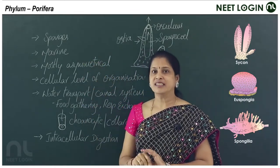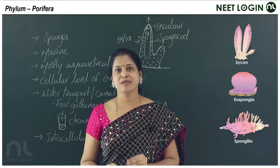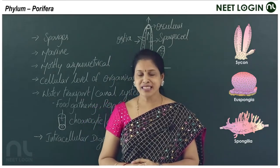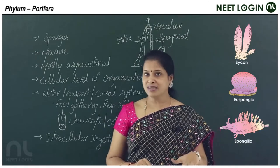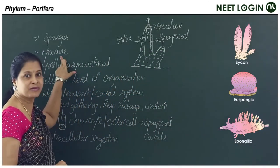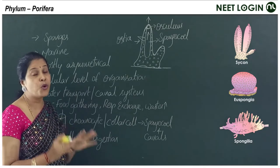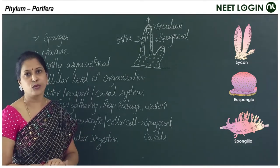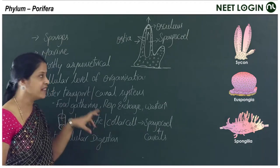The poriferans are the first metazoans — the earliest metazoans. They are generally marine; some are freshwater, but mostly they are seen in marine waters, in the oceans and seas.